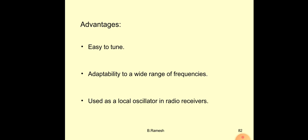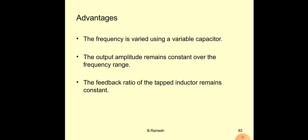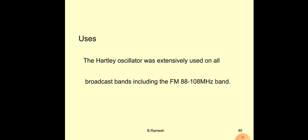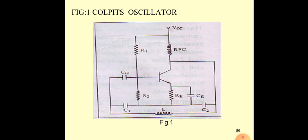Advantages: easy to tune, adaptable to a wide range of frequencies, used as a local oscillator in radio frequencies. The frequency is varied using a variable capacitor. The output amplitude remains constant over the frequency range and the feedback ratio of the tapered inductor remains constant. Disadvantage: the harmonic content of the output is high — it is not suitable for generating a pure sine wave because of inductor losses. The Hartley oscillator was extensively used on all broadcast bands including FM, 87 to 108 MHz.